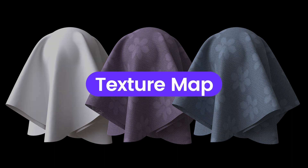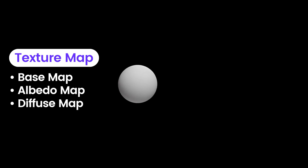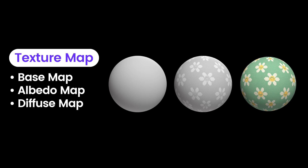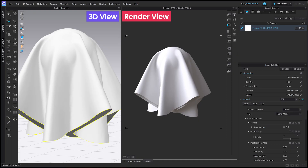Let's start with what exactly a texture map is. Texture map is also known as base map, albedo map, or diffuse map. It shows the original color and pattern of the texture. Let's apply a texture map in Clo.